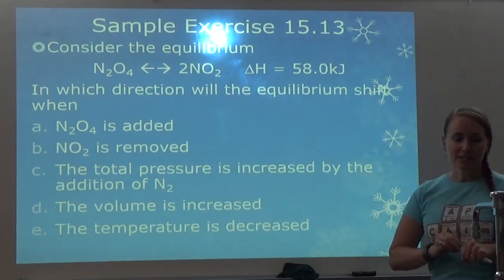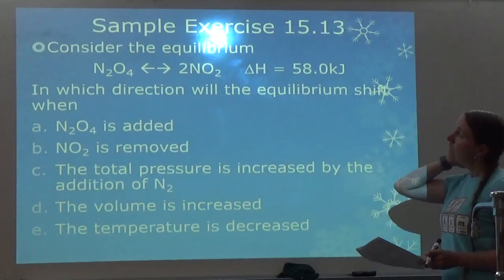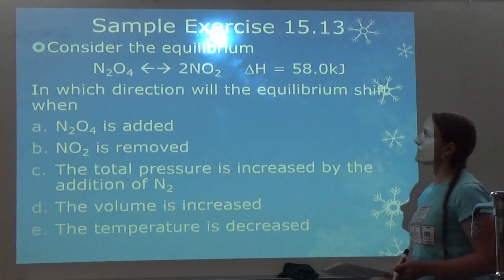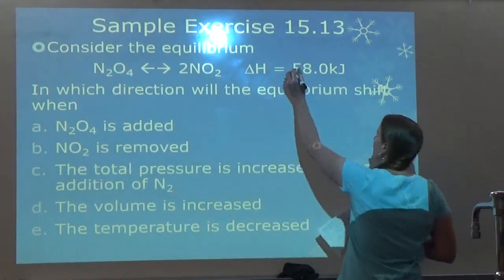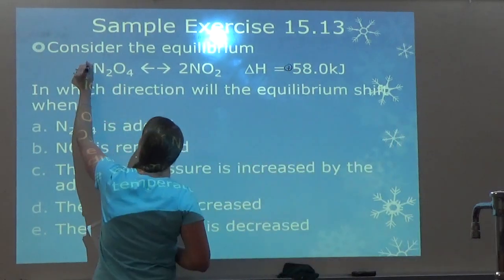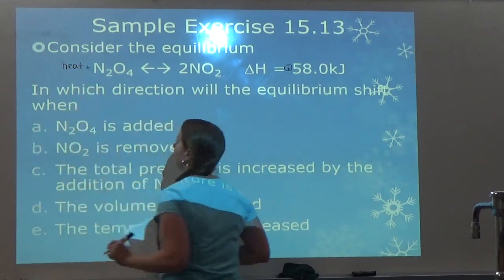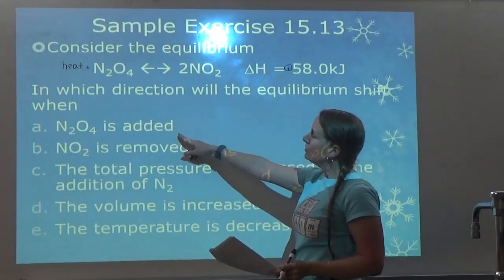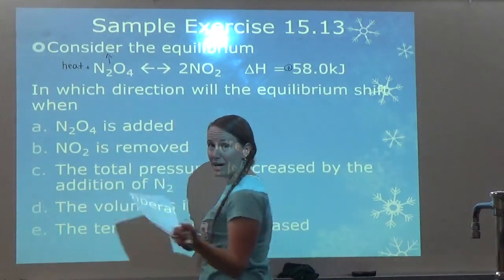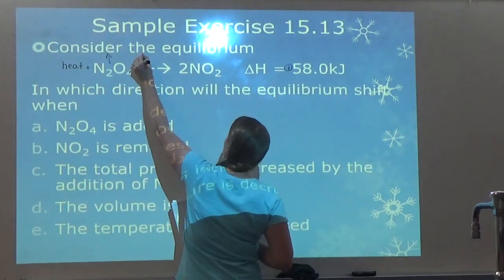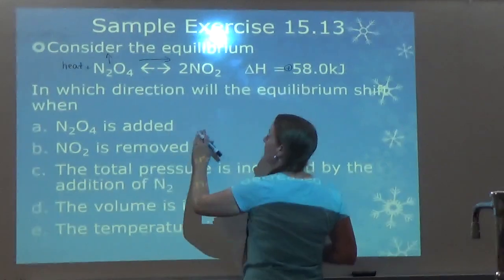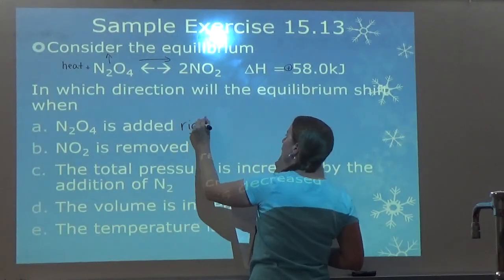Let's look at some examples together. It says: in which direction will equilibrium shift? We're given a reaction with a positive delta H, so heat is considered a reactant. Part A: N2O4 is added. If I add N2O4, now I have too much, so it's going to shift to the products to get rid of that extra N2O4. We say it shifts to the right.